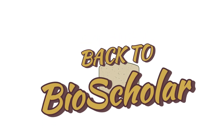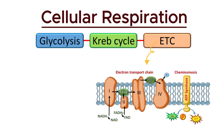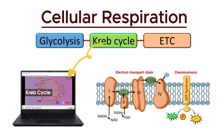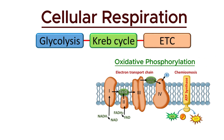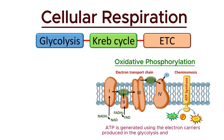Hello everyone, and welcome back to the third part of our series on cellular respiration. In the previous videos, we explored glycolysis and the Krebs cycle. Today, we're diving into oxidative phosphorylation, the final stage where ATP is generated using the electron carriers produced in the earlier steps.